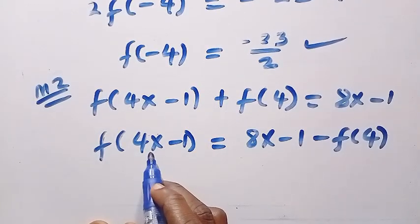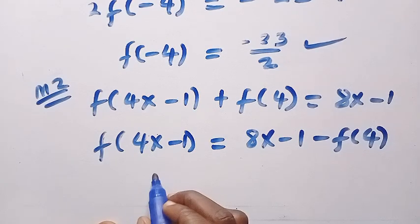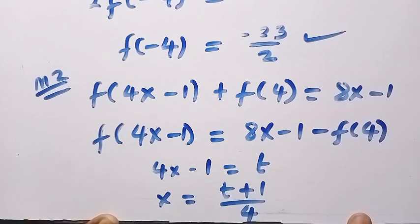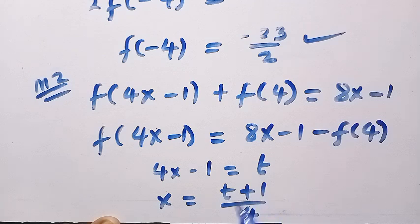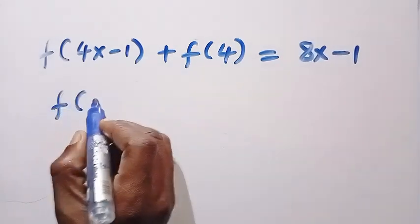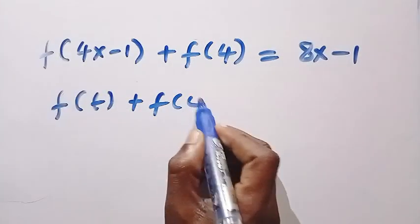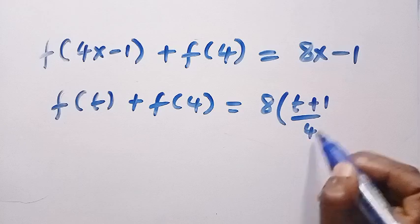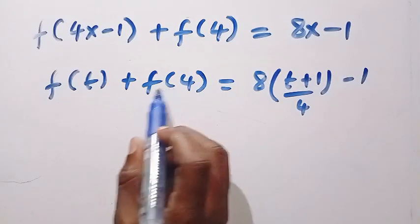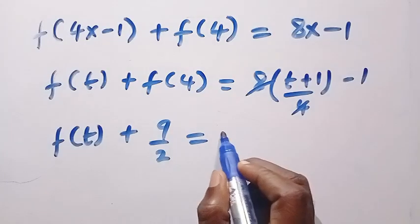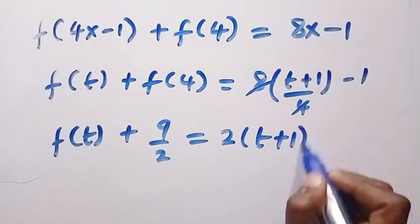We let 4x minus 1 equals t, so x equals t plus 1 divided by 4. Everywhere we see x, we change it to t plus 1 divided by 4. Changing 4x minus 1 to t, we have f of t plus f of 4 equals 8 into bracket of t plus 1 divided by 4, then minus 1. We know that f of 4 is 9 over 2, so we get 2 times bracket of t plus 1 minus 1.